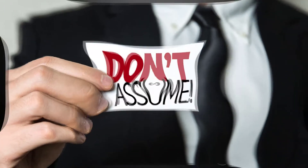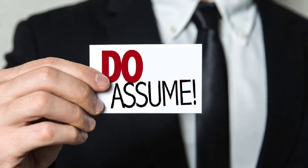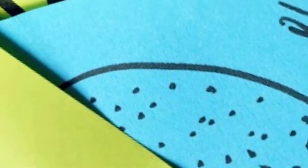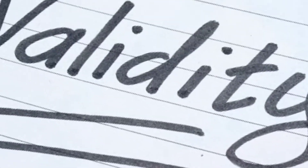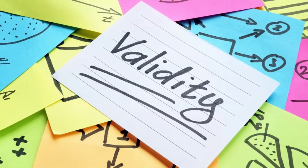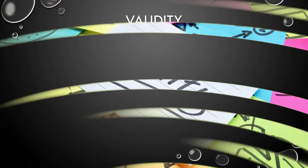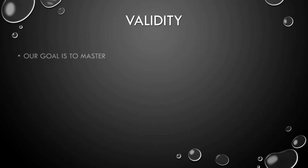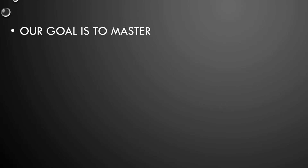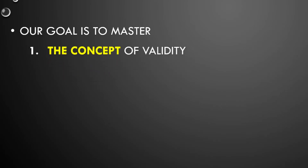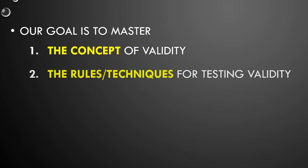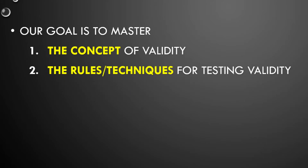When it comes to deductive arguments, one of the most important qualities they can possess is validity. It applies only to deductive arguments, and it's a characteristic of the argument itself — not the claims within the argument. We want a valid argument and we want to avoid an invalid one. So we need to master two things: the concept — understanding what validity means — and the rules or techniques by which we can test for validity. We'll explore some of the tests over the course of several upcoming videos.